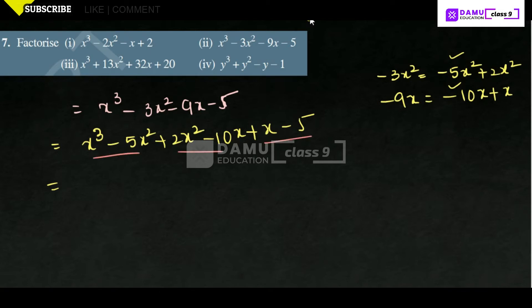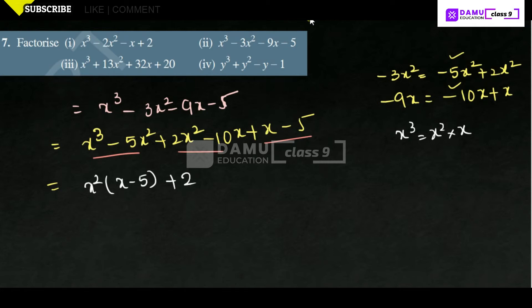From the first group, x² is common, giving x(x - 5). We can write x³ in the format of x² into x. Then in the next group, 2x you can take outside. What is the term if you take 2x? 2x into x² — x into x — gives 2x² - (x already came out), then x - 5. So 2x into 5 will be 10x.